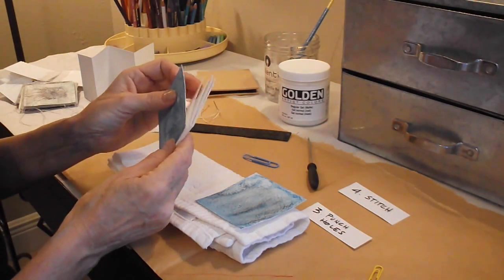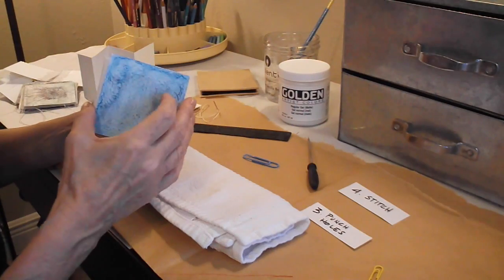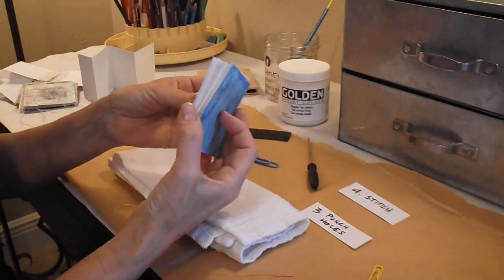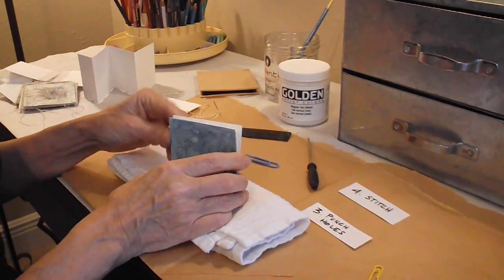Then simply glue these together—this end and this end—to make the front cover and the back cover, and then you have a little concertina, a covered concertina.